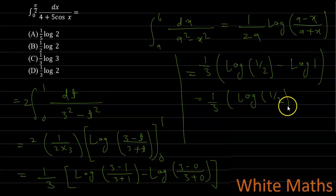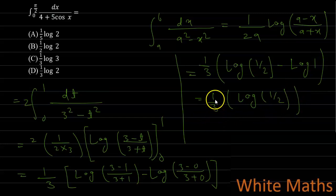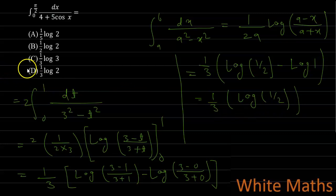Since log(3/3) = log1 = 0, the expression simplifies to (1/3)·log(1/2). Therefore option D, which is 1/3 log2 (in absolute value), is the correct answer. Thank you.